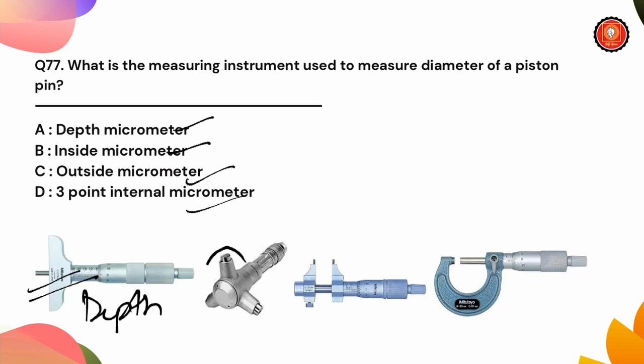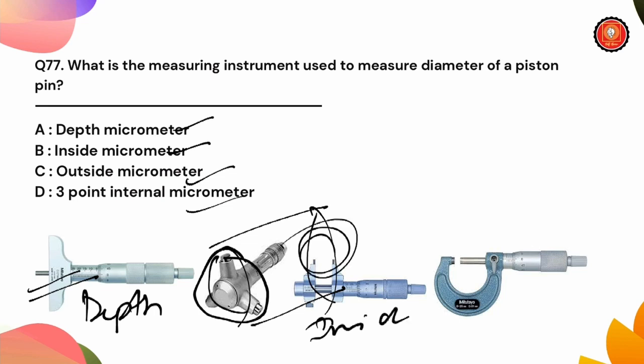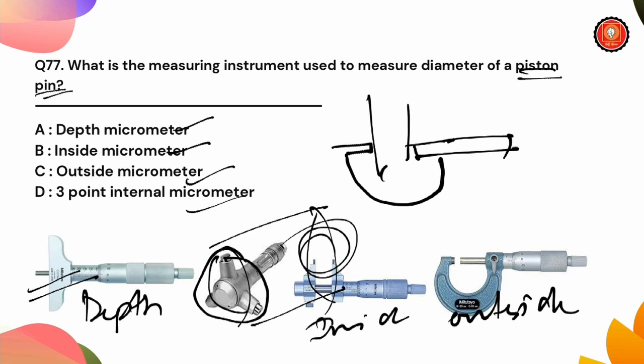Depth micrometer is for depth measurement. 3-point internal micrometer is for internal diameter measurement. Inside micrometer is for inside diameter measurement. But we need to use outside micrometer for piston pin, with the fixed anvil and moving anvil to measure the outside diameter.